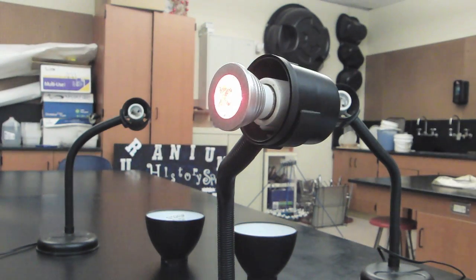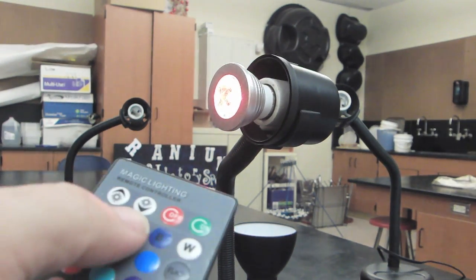There we go, and if I take the controller and point it at the lamp, there's red, green, blue, orange, yellow. I can go through a variety of colors simply by pushing the different buttons.